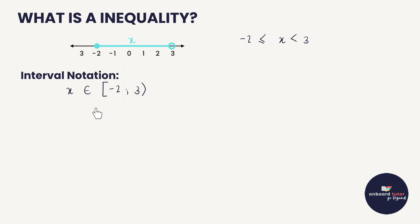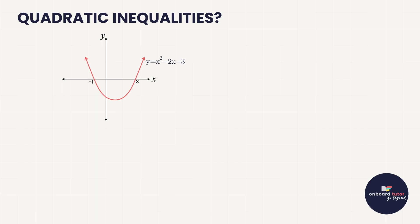These are two different notations to say exactly the same thing. Generally either one is acceptable, but it is so helpful to know how to read both of them, because you never know how your information will be represented in a test. Now let's shift our attention to quadratic inequalities. The previous one we looked at was a linear inequality — we can even see it was on a straight line — but here at grade 11 level, we want to know how to deal with quadratic inequalities.